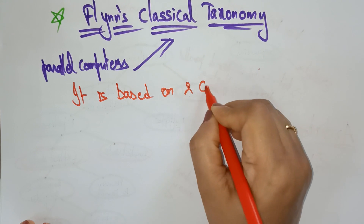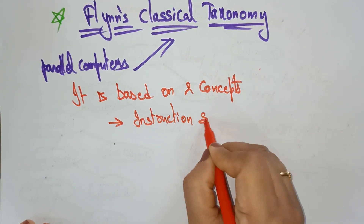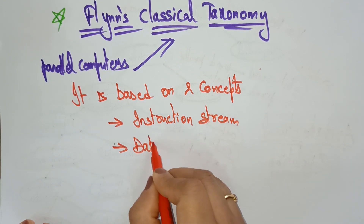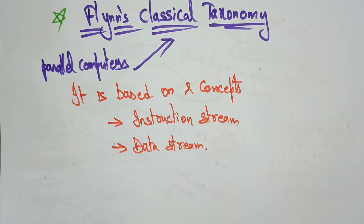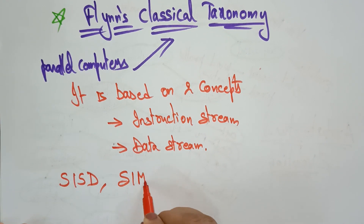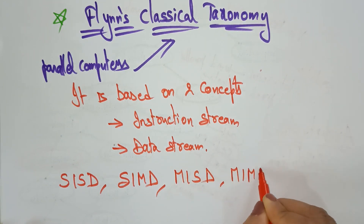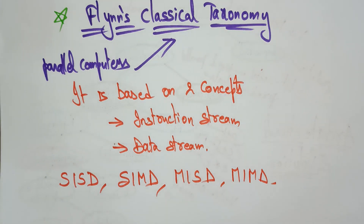Flynn's Classical Taxonomy is based on two concepts: instruction stream and data stream. Based on these two concepts, Flynn's Classical Taxonomy was introduced to distinguish multiprocessor computer architecture. There are four types: SISD (Single Instruction Single Data), SIMD (Single Instruction Multiple Data), MISD (Multiple Instruction Single Data), and MIMD (Multiple Instruction Multiple Data). These are the four classifications used to distinguish multiprocessor computer architecture.